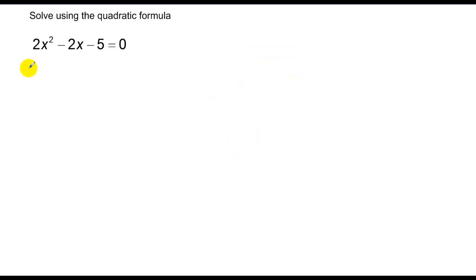So in this case, we have an a coefficient of 2, b is negative 2, and c is negative 5. Let's go through. We have 2 plus or minus square root of negative 2 squared minus 4 times a times c, over 2 times 2, which is 4.